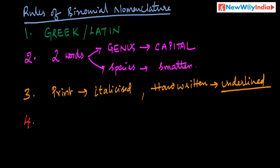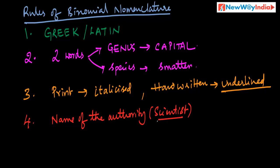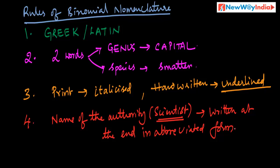Rule four: the name of the authority — the scientist who gave the name — is written at the end of the binomial scientific name in abbreviated form. These are the four rules of binomial nomenclature: either Greek or Latin; two words — genus capital, species small letter; italicized when printed, underlined when handwritten; and the scientist's name abbreviated at the end.